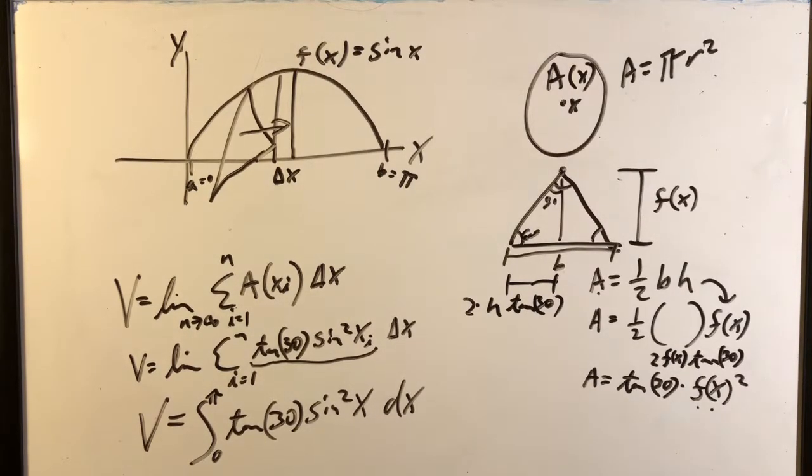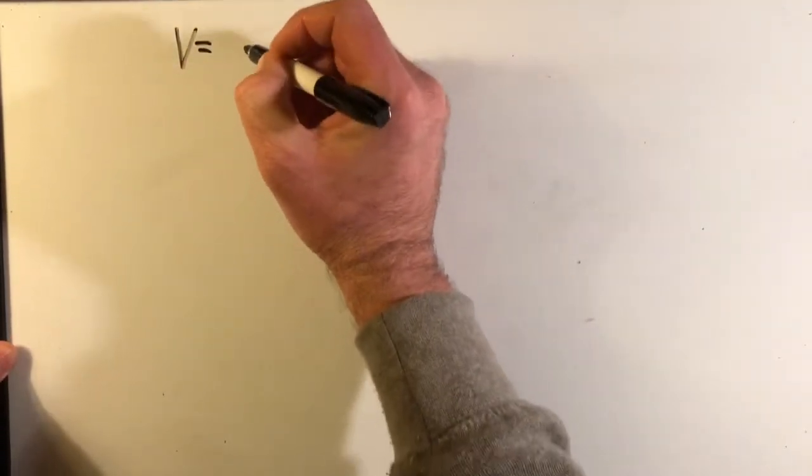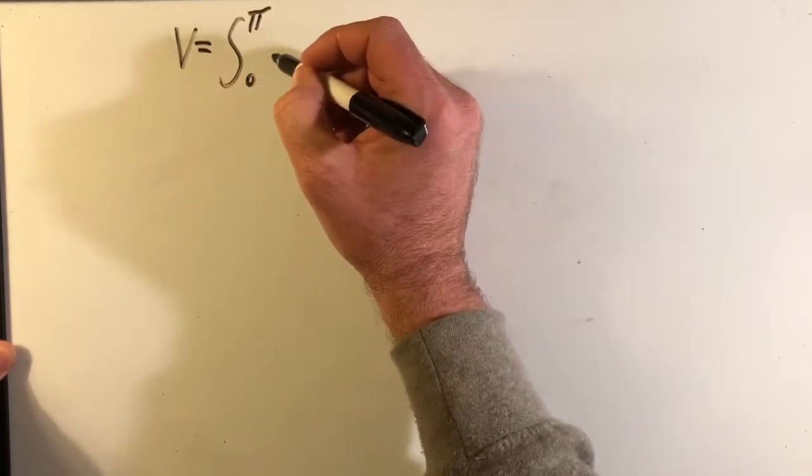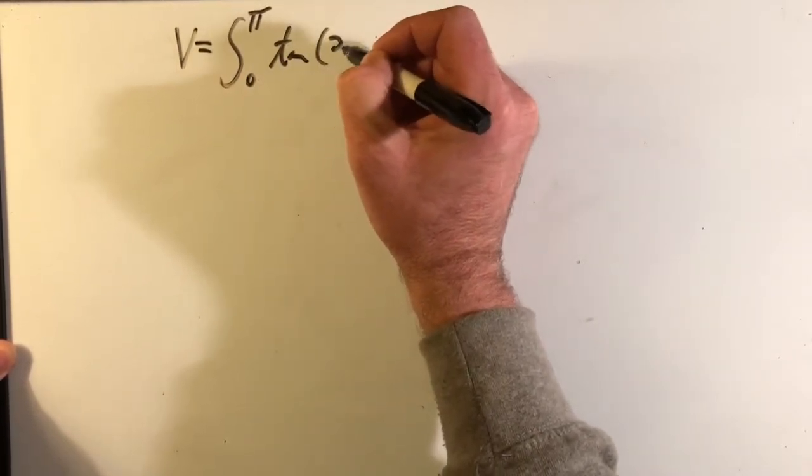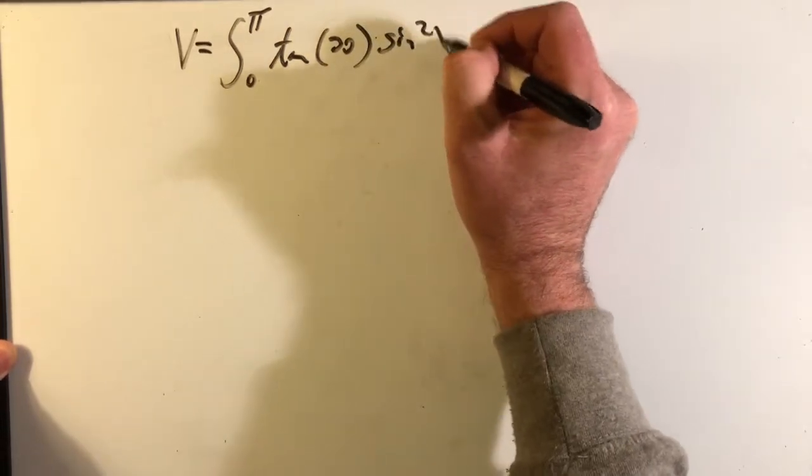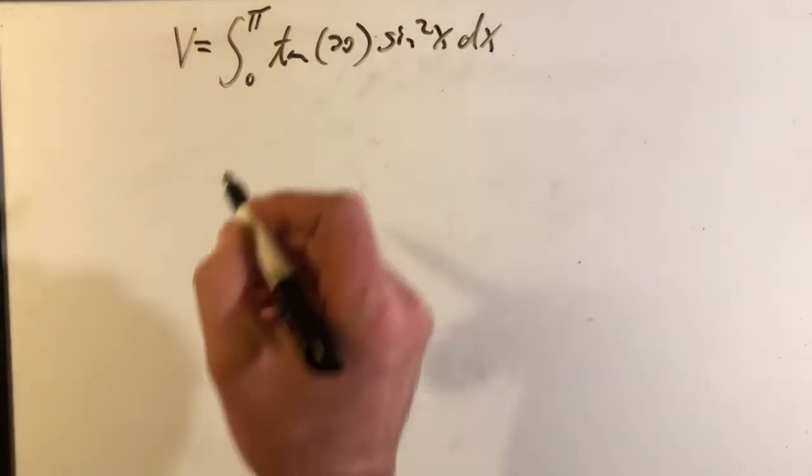So let me get another board and I'll rewrite that again. V equals, and that was integral from 0 to pi, and that was a nice constant tangent 30, and that was sine squared x dx.